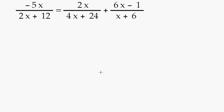My name is Christopher Carey and today in this video we're going to solve an equation that is going to require some factoring and possibly running into solving a quadratic equation. So let's take a look here and see what we've got. We have negative 5x over 2x plus 12 equals 2x over 4x plus 24 plus 6x minus 1 over x plus 6.